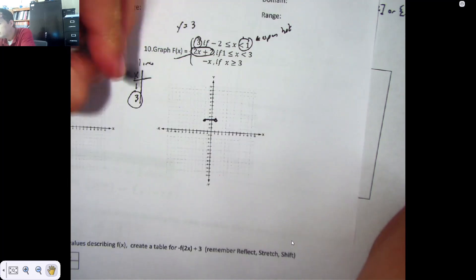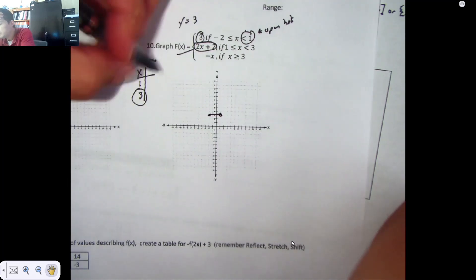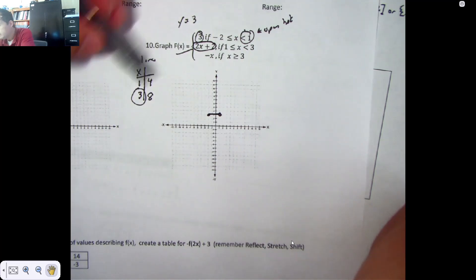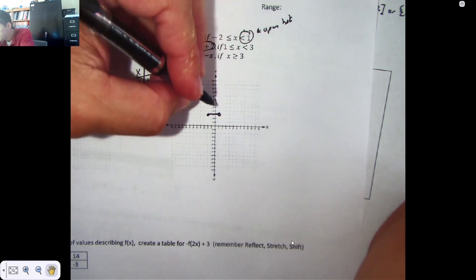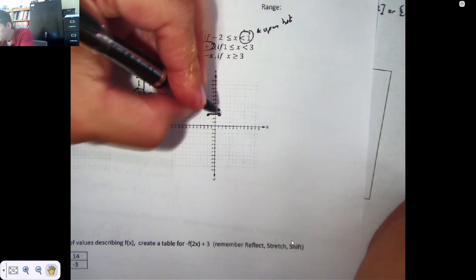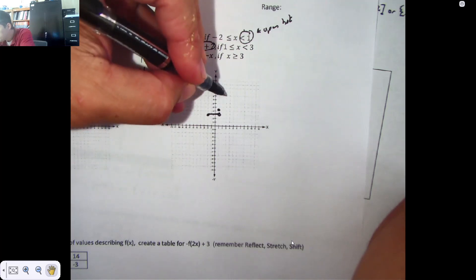If I plug in a 1, it looks like I spit back a 4. If I plug in a 3, I return an 8. So 1, 4 exists on here. It is solid hole, and so does 3, 8, but 3, 8 is open.